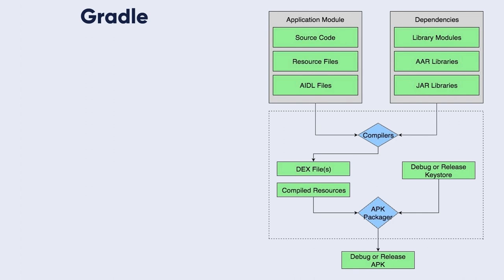Before your app can be installed on an Android device or distributed to a store such as Google Play, the APK or AAB must be signed. The packager signs your app using either the debug or release keystore. If you are building a debug version intended only for testing and profiling, the packager signs it with the debug keystore. For a release version intended for the Play Store, the packager signs it with a release keystore that you need to configure.